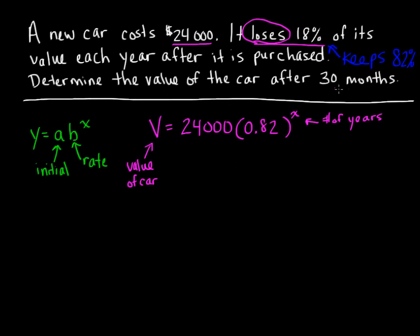We want to know what is the value of the car after 30 months. Because we've written an equation where x represents the number of years, we want to first change the number of months to years so we can use it in this function equation. So 30 months, if we divide that by 12 because there's 12 months in every year, we get 2.5 years. This is the value that we can use for x in this function.